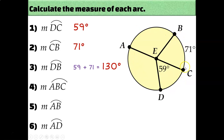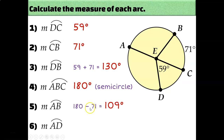What about arc ABC? Since AC is a diameter — a straight angle — arc ABC is a semicircle measuring 180 degrees. To find arc AB: the entire semicircle is 180, part of it is 71, so arc AB equals 180 minus 71, which is 109 degrees. This is essentially the same concept as linear pairs — two parts adding to 180 — just applied to arc measures instead of angles.